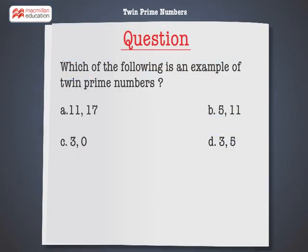Which of the following is an example of twin prime numbers? Option a: 11 and 17, option b: 5 and 11, option c: 3 and 0, option d: 3 and 5.